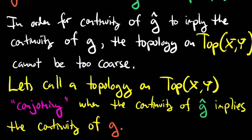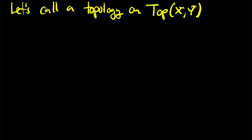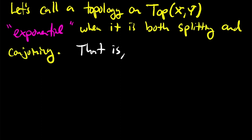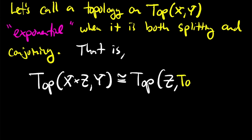Let's call a topology on top(x,y) exponential if it's both splitting and conjoining. That is, an exponential topology is one for which we get the desired bijection between the continuous functions from x cross z into y and the continuous functions from z into top(x,y).